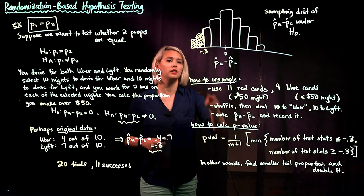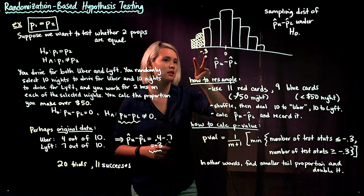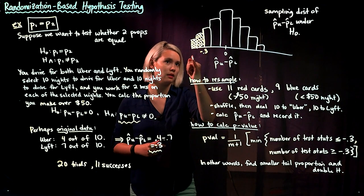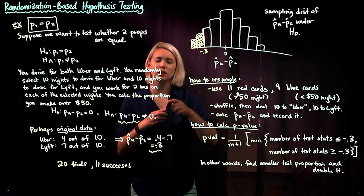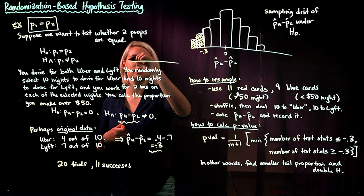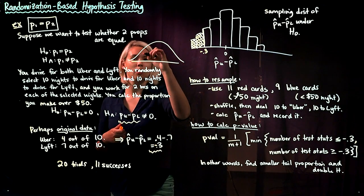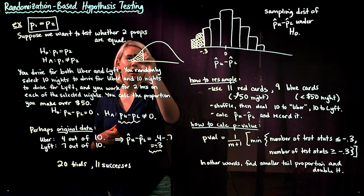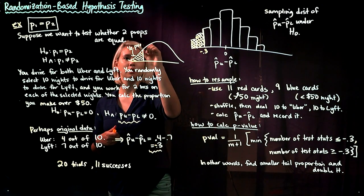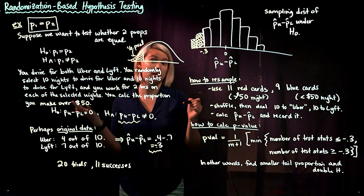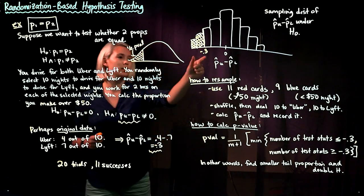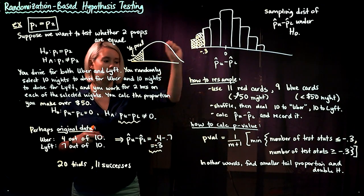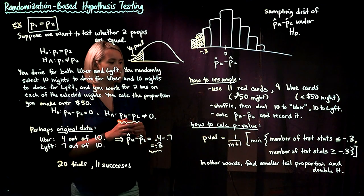We calculate the proportion of test statistics that are less than or equal to negative 0.3 — that proportion is half the P-value. Just like in classical hypothesis testing with a two-sided alternative, we find the smaller tail and double it to get the entire P-value.